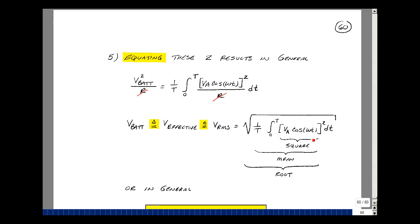Now, if you look at this, what I've got here is the square. I've got the mean value, and then I've got the square root. So sometimes this effective voltage is also called the RMS voltage, which stands for root mean square.